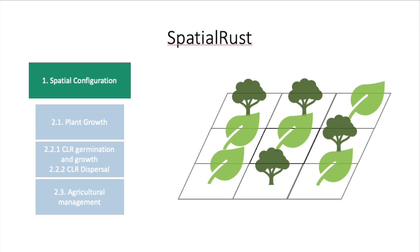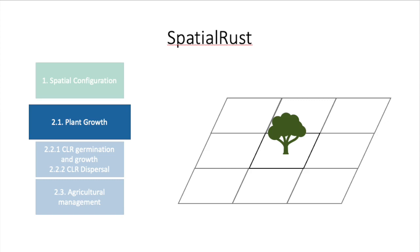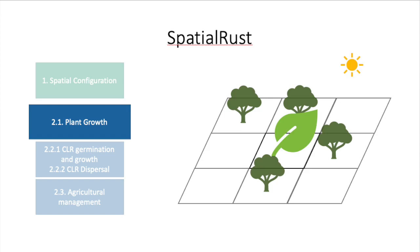Then, during the simulation, the first step is plant growth, which, in the case of shade trees corresponds to the accumulation of shade, and in the case of coffee plants, corresponds to the accumulation of leaf area and coffee production. And this growth is dependent on the shade that is produced by neighboring shade trees.